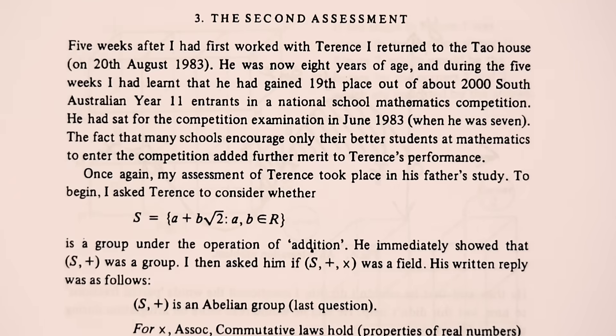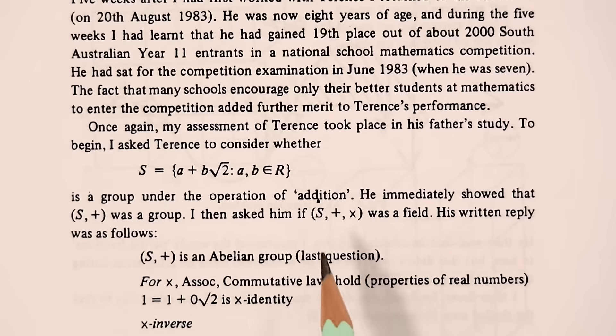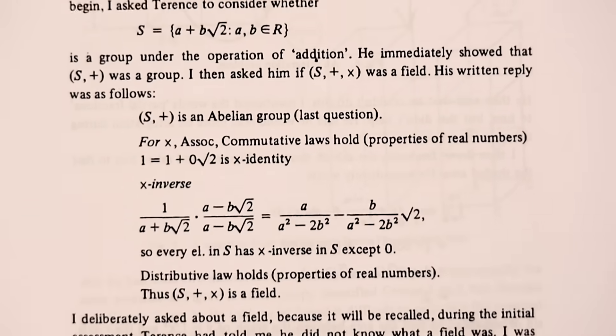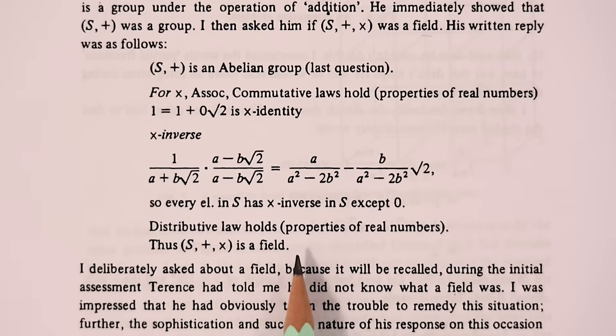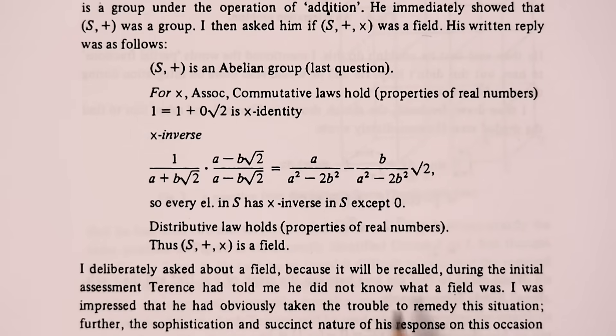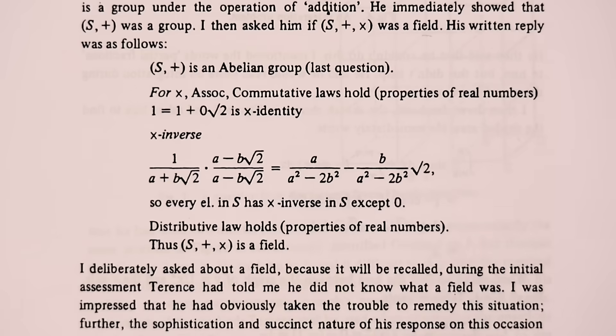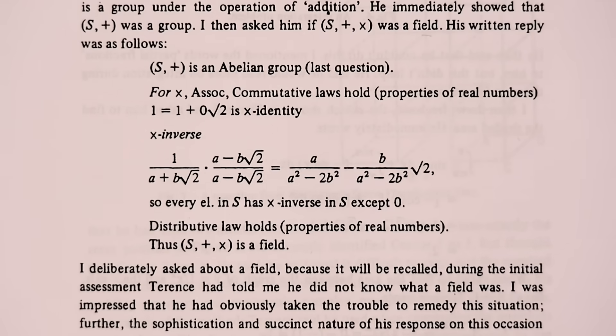Five weeks later, Clements came back for a second visit, and he asked Terence if something was a field. Here was Terence's answer, clearly demonstrating that since the last visit, he now knew exactly what a field was. This kind of answer is something that a university student would be proud of. And it shows just how fast Terence was able to learn concepts.